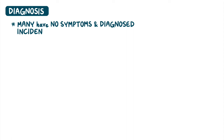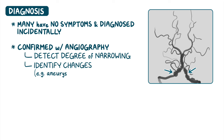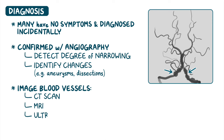Many individuals with fibromuscular dysplasia have no symptoms and are diagnosed incidentally when blood vessels are imaged for another reason. The diagnosis can be confirmed with angiography, a procedure where dye is injected into blood vessels to detect the degree of narrowing and identify changes such as aneurysms or dissections in the vessel wall. Other tests used to image the blood vessels include a CT scan, magnetic resonance imaging, or an ultrasound, depending on the affected location.